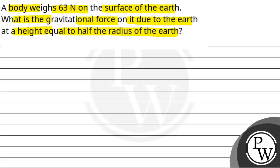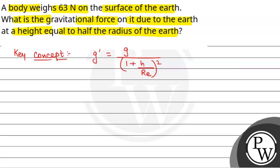We will solve this question. First of all, we will see what the key concept used to solve this question will be. The key concept is acceleration due to gravity at a height h. g' is given by g divided by (1 plus h by radius of earth) whole squared, where g is the acceleration due to gravity on the surface of earth.